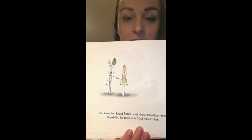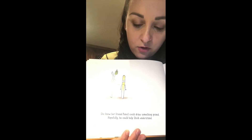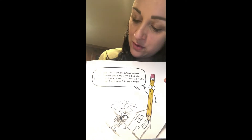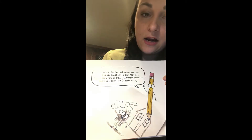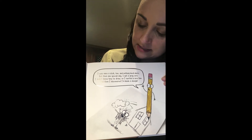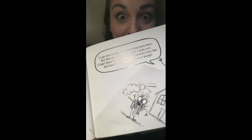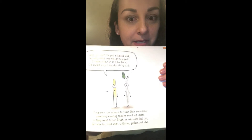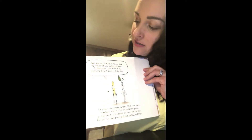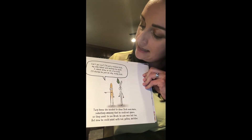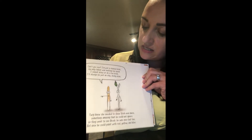Here's this page. She knew her friend Pencil could draw something grand — hopefully he could help Stick understand. Here's Pencil. "I was once a stick too and nothing much more. But then one special day, I got a gray core. And I didn't know how to draw, so I swirled a nice line, and then I discovered I made a design." And that looks just like the Scribble from the Scribble story! But Stick says: "I'm not just a stained stick — my only talent was melting too quick. I cannot draw or do a fun trick. I'll always be just an icky, sticky stick."